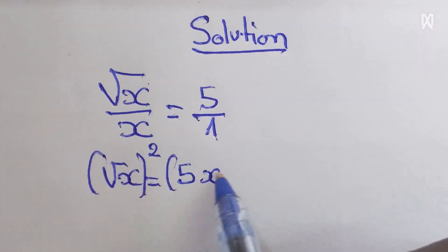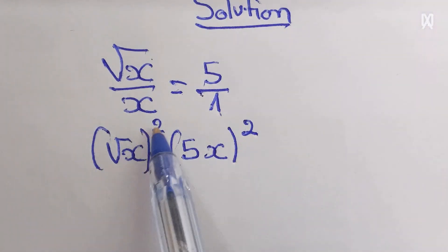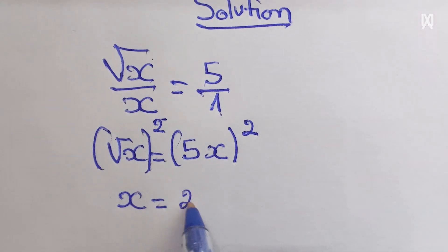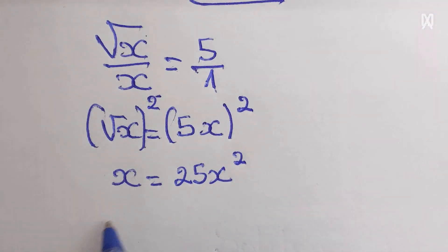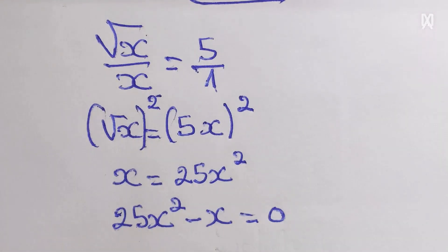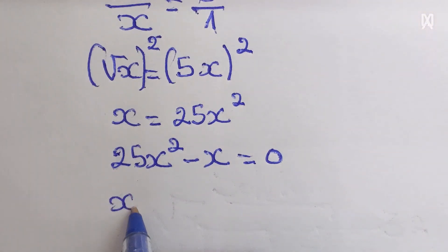Then by squaring both sides, this one will go to get x which is equal to 25x squared. Or we can write this one as 25x squared minus x which equal to zero.